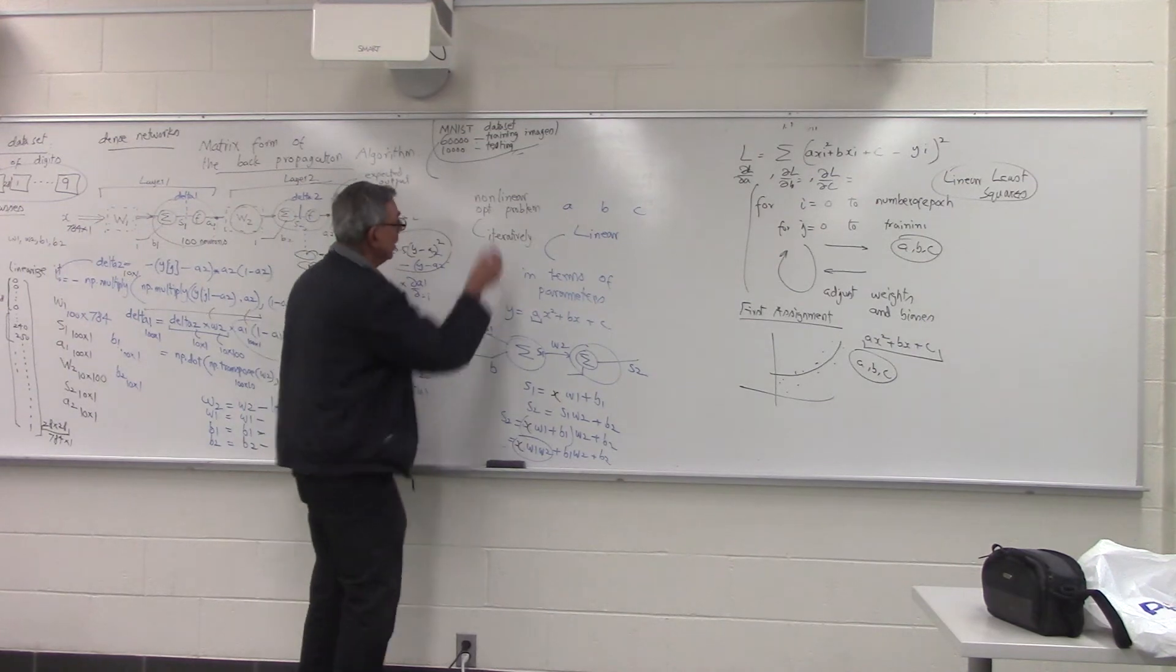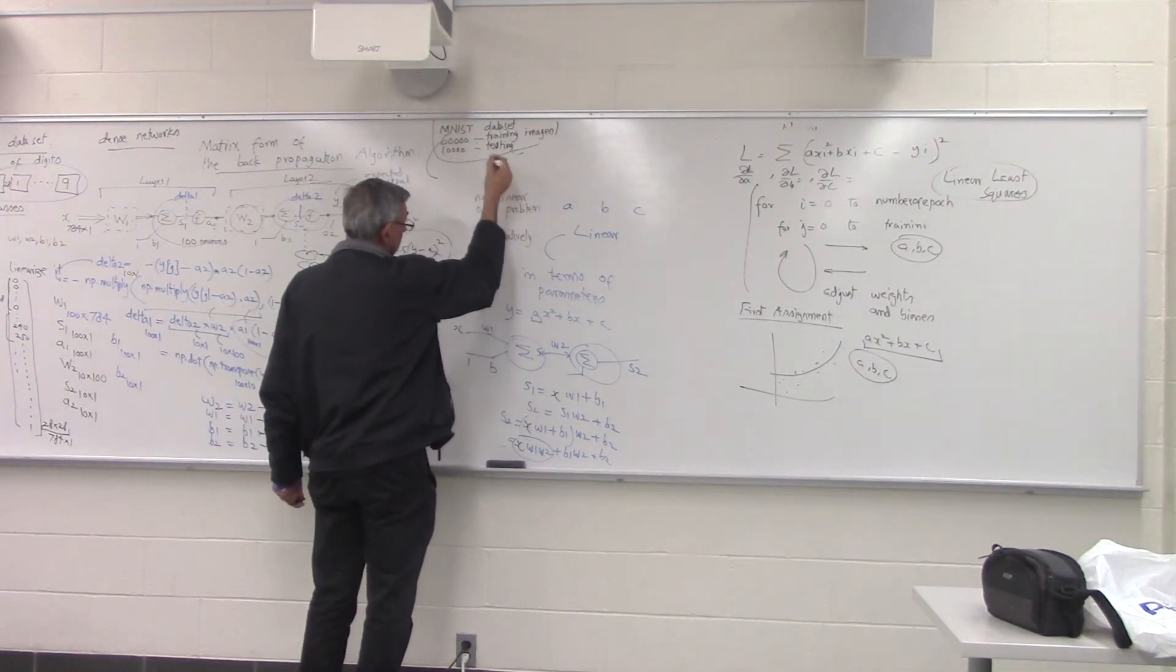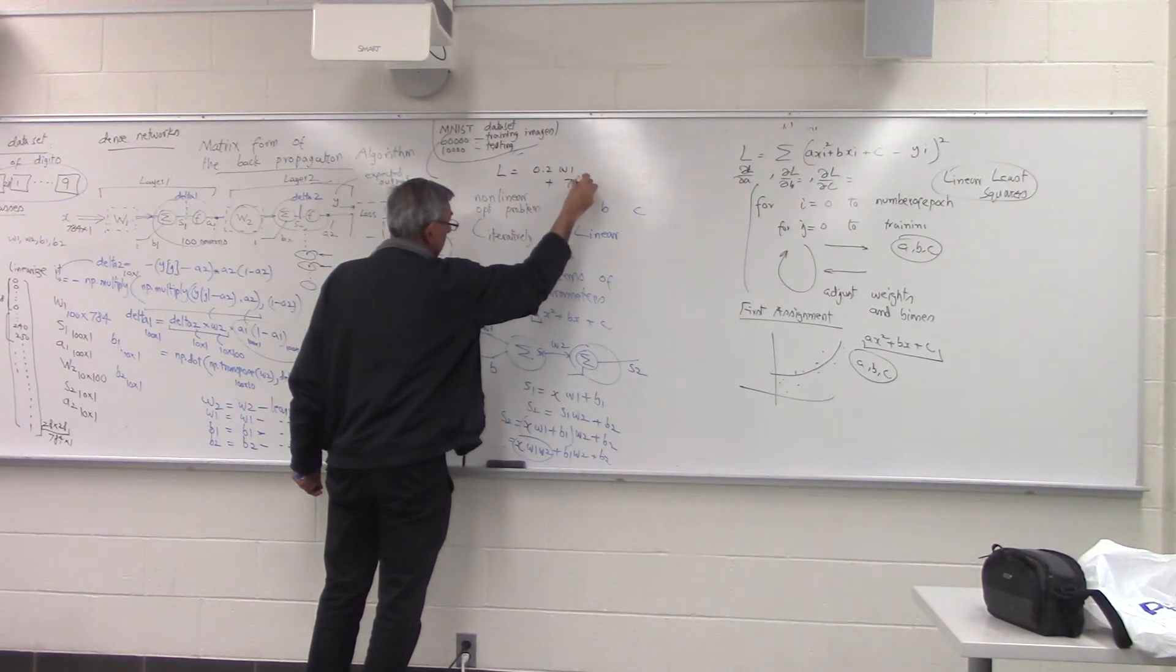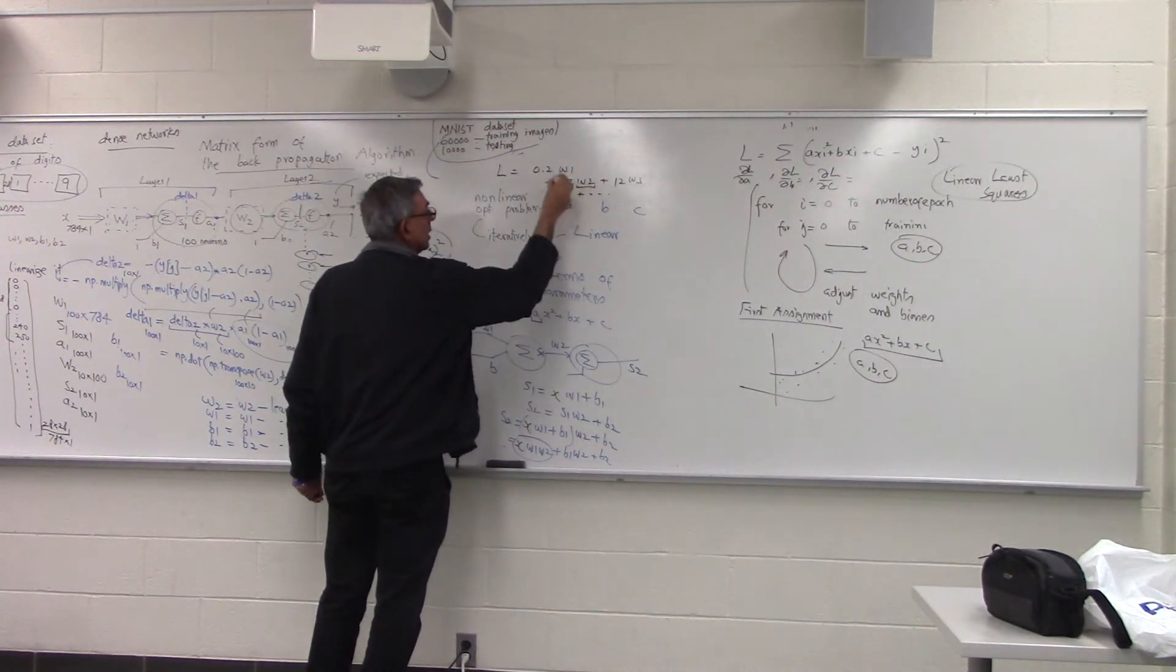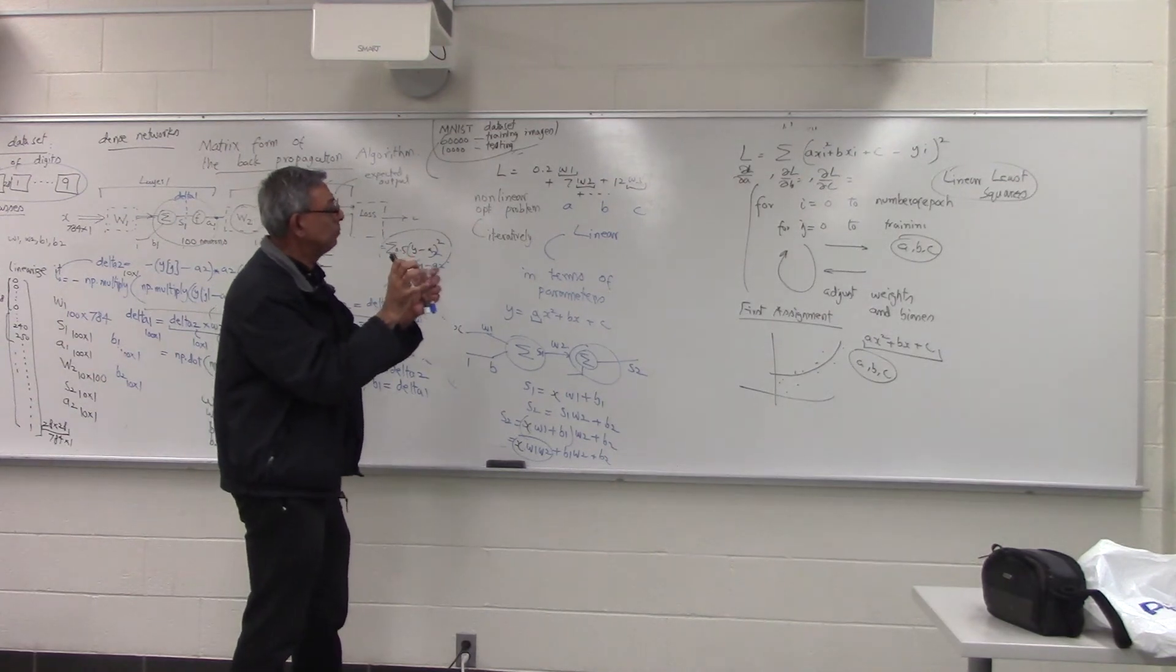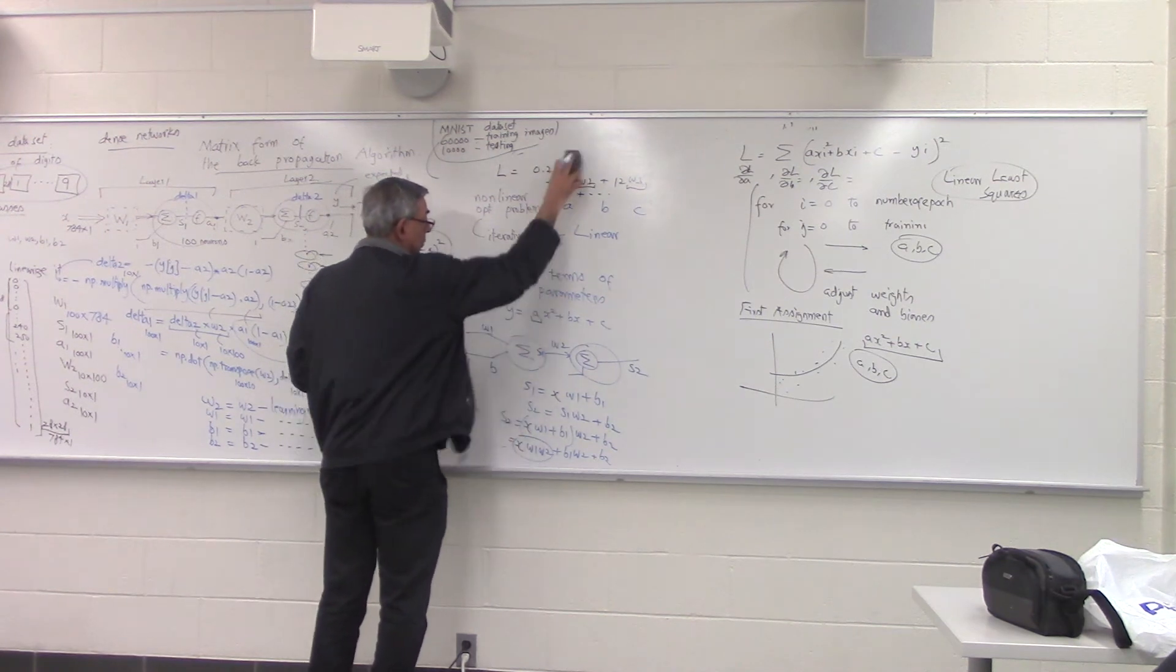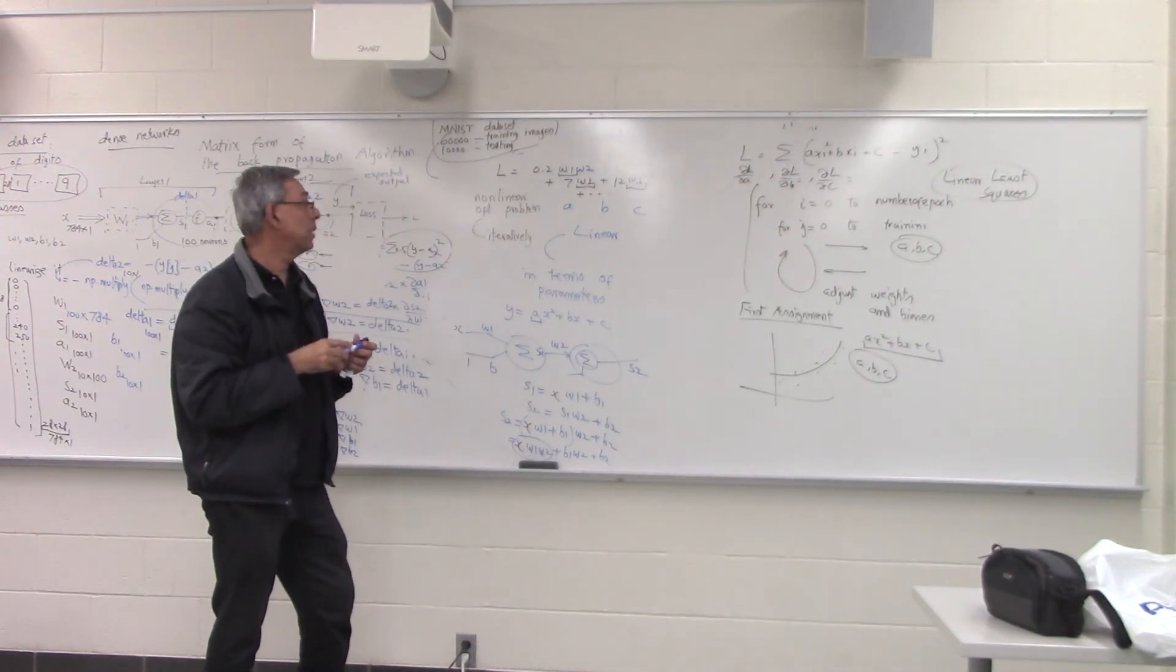What makes it nonlinear is - see, if we had five parameters that we wanted to determine, and the final equation is, let's say, loss equal to 0.2W1 plus 7W2 plus 12W3 and so on - as long as these unknown parameters are appearing without a square or without being multiplied by two unknown parameters, that's linear. What would make it nonlinear is if we had a square over here, or if we had W1 times W2 over there. That's what makes it nonlinear.